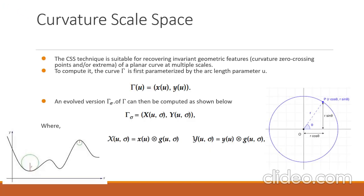Now let's discuss what curvature scale space is. First, we should understand what is meant by curvature. Curvature in simple terms can be described as how much a curve is bending. It is inversely proportional to the radius of curvature. Here we can see that where the curvature is less, the radius of the fitted circle is high, and where the curvature is more, the radius of the fitted circle is very small. From this, we can understand that the curvature is inversely proportional to the radius of curvature, and using this principle we can calculate curvature at any point of a curve.